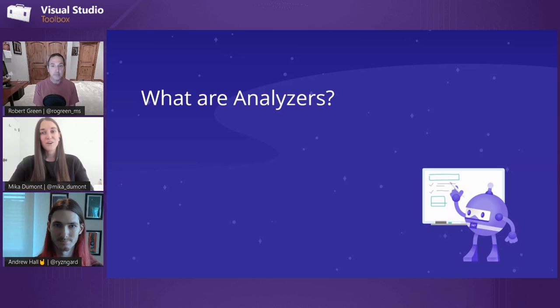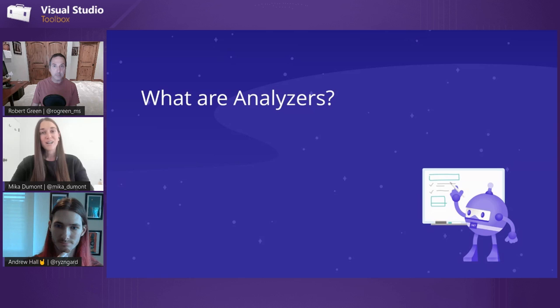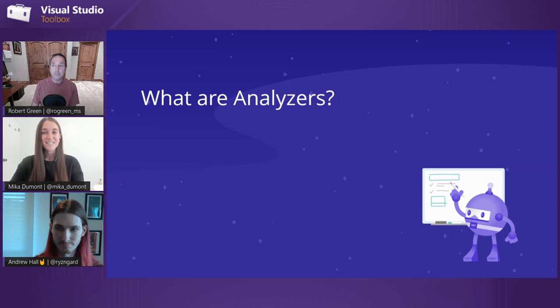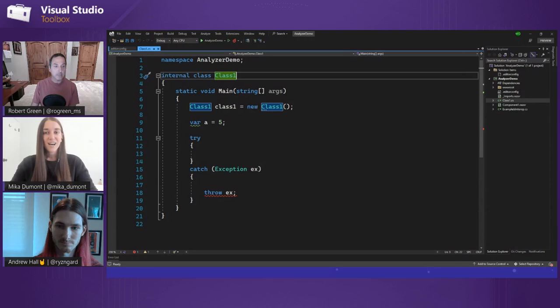Analyzers are basically a tool that will run analysis on your code as you type and will report diagnostics in the editor. These diagnostics will typically manifest in the editor as squiggles. So if you're in Visual Studio or VS Code and you see squiggles, those are analyzers running in the background. Analyzers can also surface a light bulb or a screwdriver suggestion, also known as a code fix or refactoring.